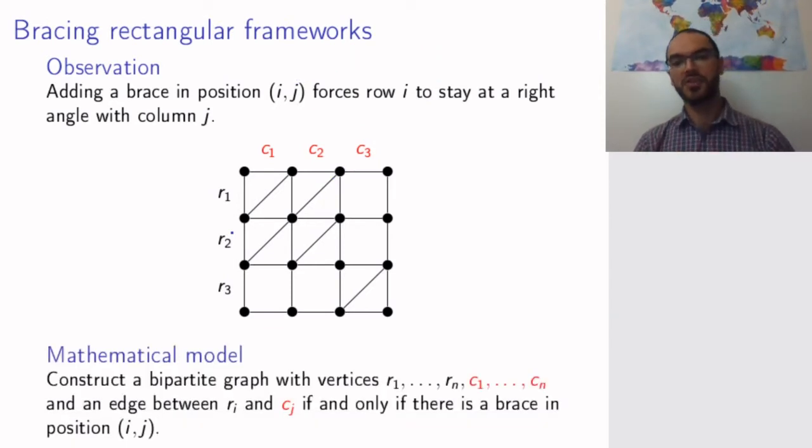The mathematical model might be a bit surprising. Although the framework itself looks like a graph, that's not the graph we will actually use. We will construct a bipartite graph where the vertices are the rows and columns—one vertex for each row, one vertex for each column. You draw an edge between a given row and a given column if there is a brace in the intersection of those two.